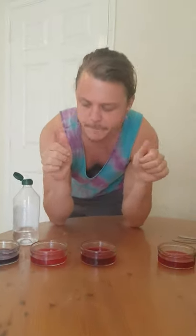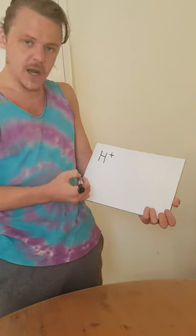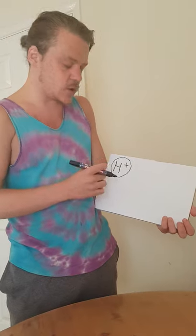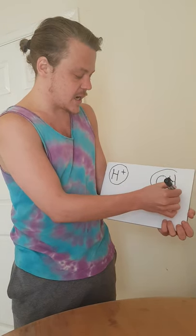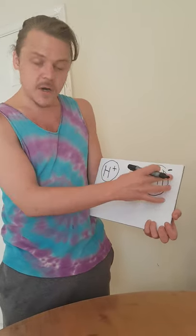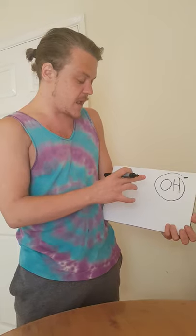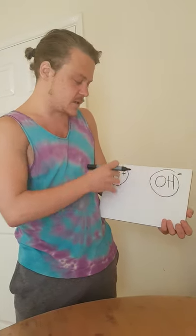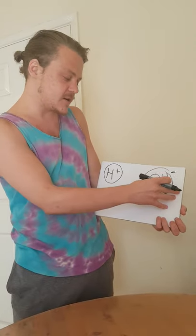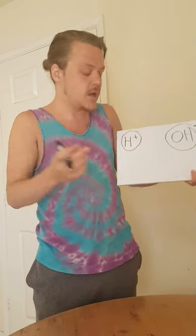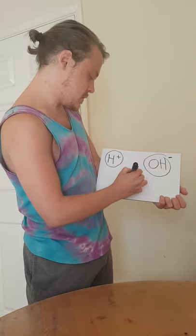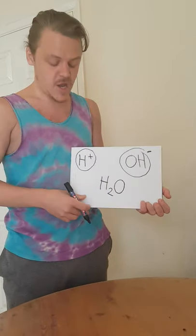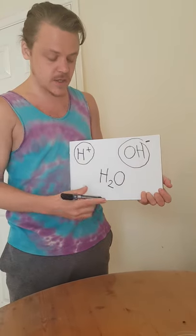Now I'm going to explain what all this acid-alkaline business means. Anything that is an acid contains hydrogen ions — little particles with a positive charge. Alkalis, on the other hand, have hydroxide ions, which have a negative charge. Both can be dangerous and cause chemical reactions, but if you have an equal amount of both — the same number of hydrogen ions as hydroxide ions — the effects cancel out and it becomes neutral. And if you think about it: two hydrogens and one oxygen — that sounds a bit like water, H₂O.